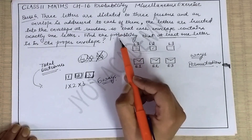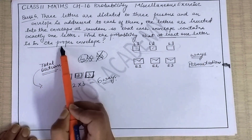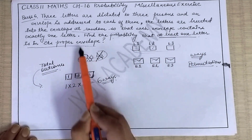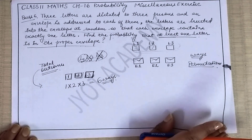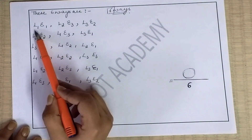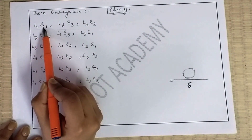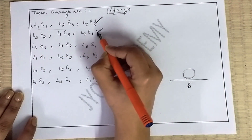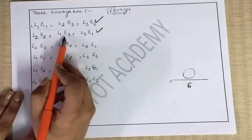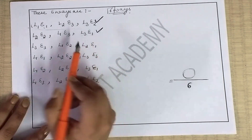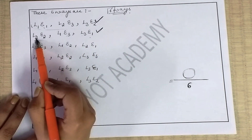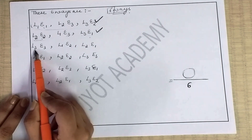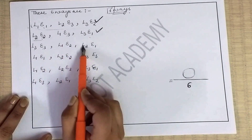They have told us to find the probability that at least one letter is in its proper envelope. Looking at the arrangements, we can see cases where letter 1 is in envelope 1, or letter 2 is in envelope 2, or letter 3 is in envelope 3 - meaning at least one letter matches its correct envelope. The other letters may be in different envelopes.